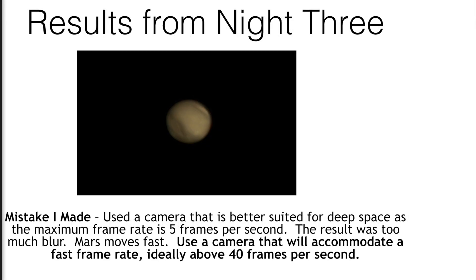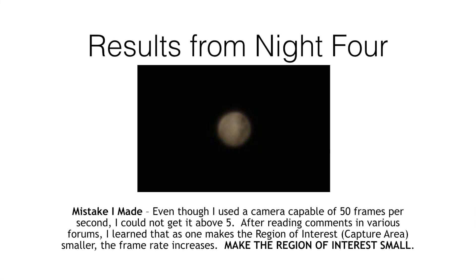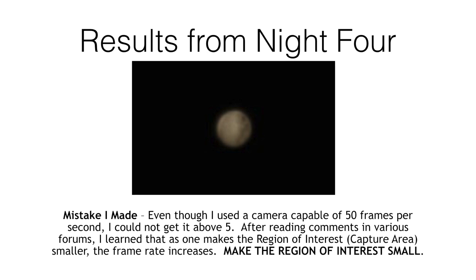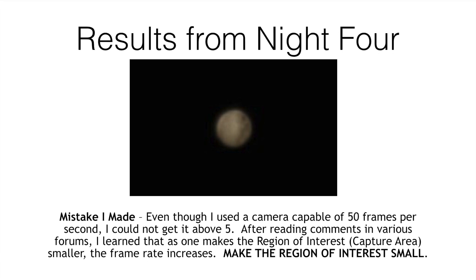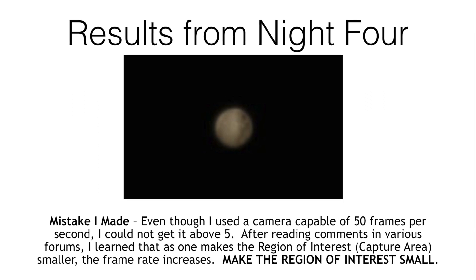In night three, I made the mistake of using a camera I use for deep space objects. Although it's a great camera, it cannot accommodate a fast enough frame rate for planetary imaging. I switched over to my far less expensive planetary imaging camera that I usually use for auto guiding, and had much better results. In night four, I didn't make the region of interest small enough and the frame rate was too slow, even though the camera was capable of a faster frame rate. I learned that reducing the region of interest would increase the frame rate.